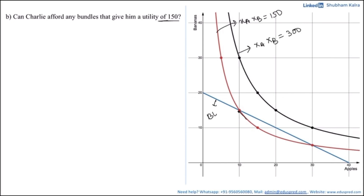The segment of the red indifference curve that lies below or on Charlie's budget line is the one highlighted in black. This segment of the indifference curve gives Charlie the utility of 150, where the two endpoint points are on his budget line, meaning they exhaust his income. Since this segment is lying below the budget line, Charlie can definitely afford them. So the answer here is yes.